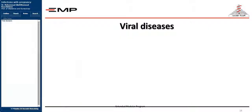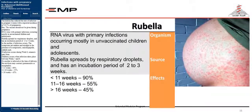Moving to viral diseases: vaccination has reduced the rate of rubella infection in pregnant women, with a reported incidence of 0.1% of pregnancies. However, the vaccine should not be given during pregnancy. Rubella is an RNA virus with primary infections occurring mostly in unvaccinated children and adolescents. It spreads by respiratory droplets and has an incubation period of 2 to 3 weeks.